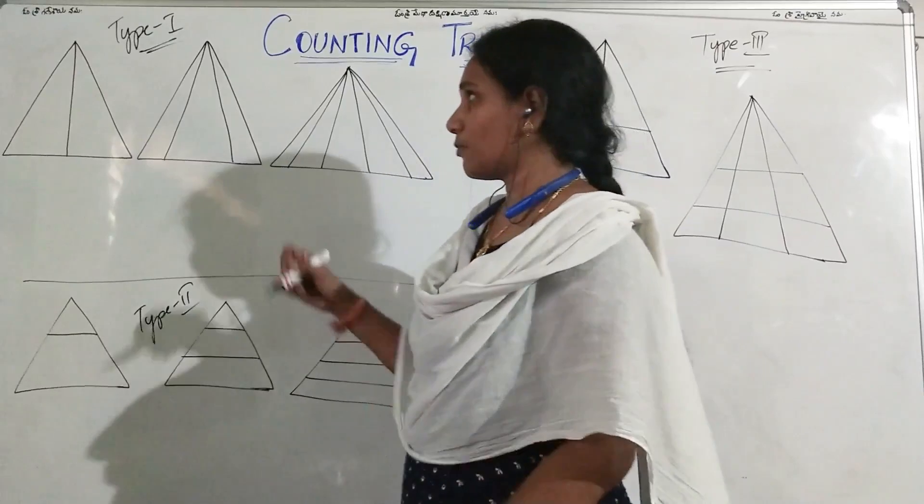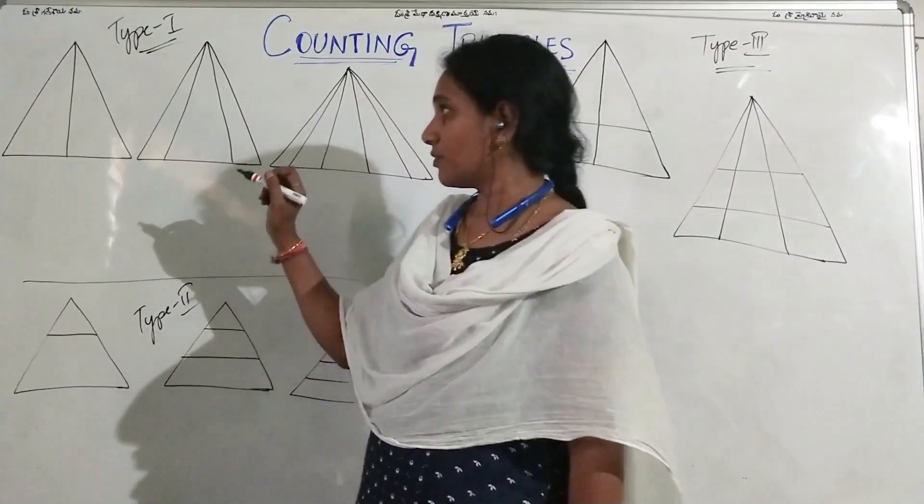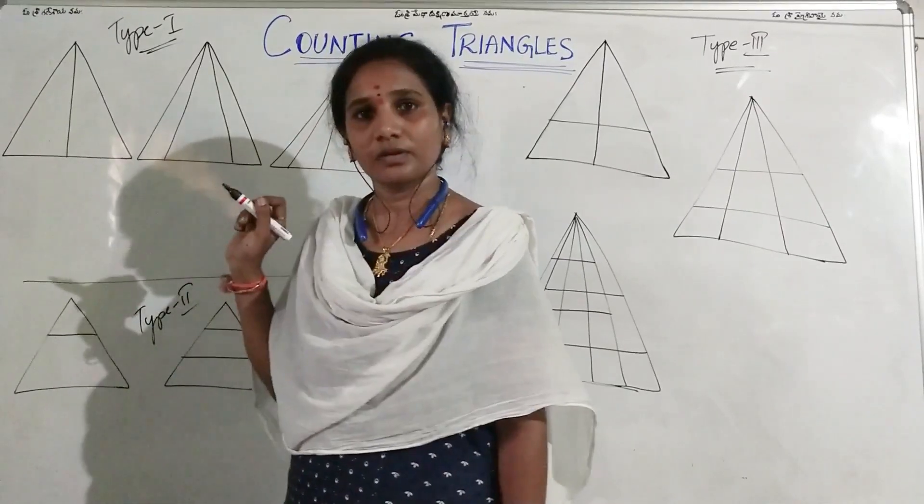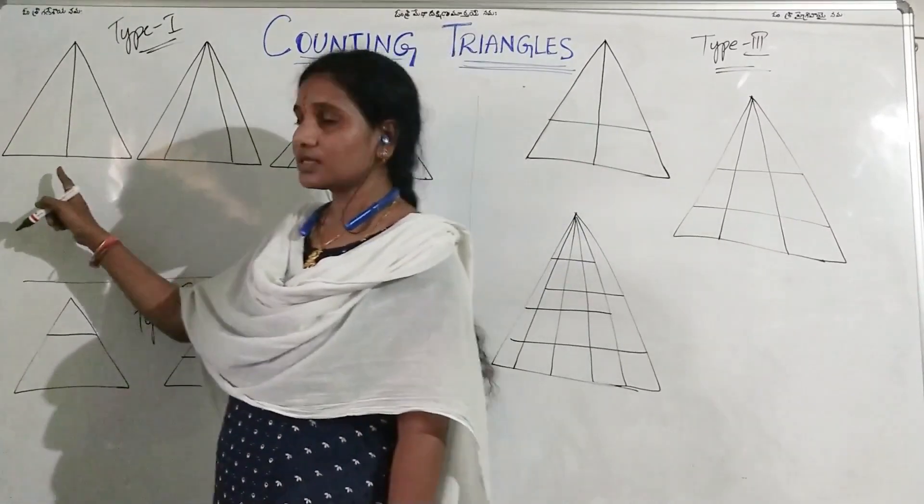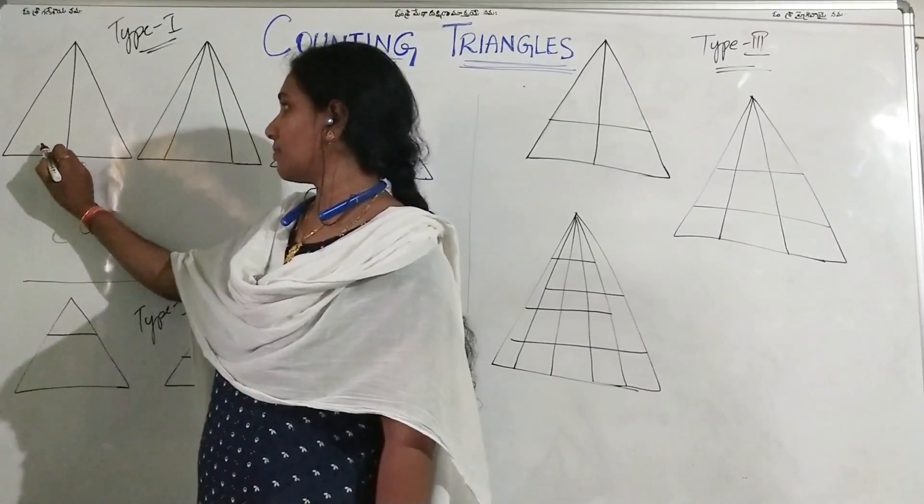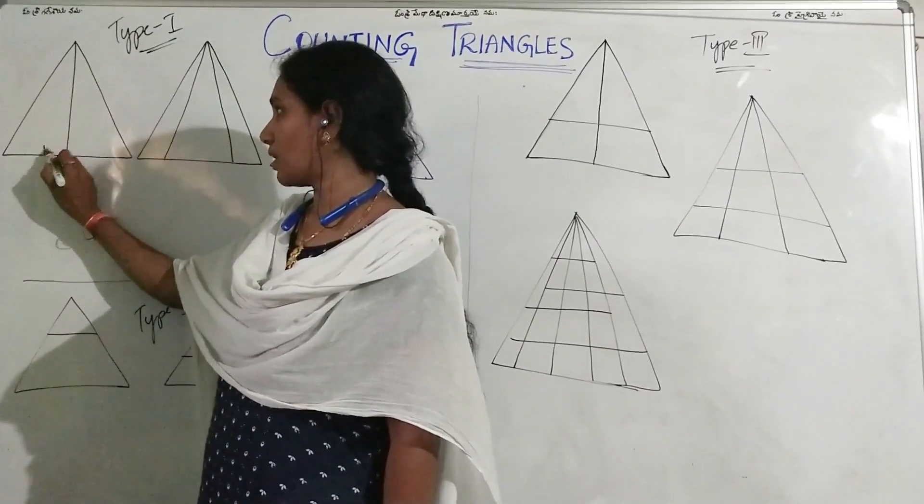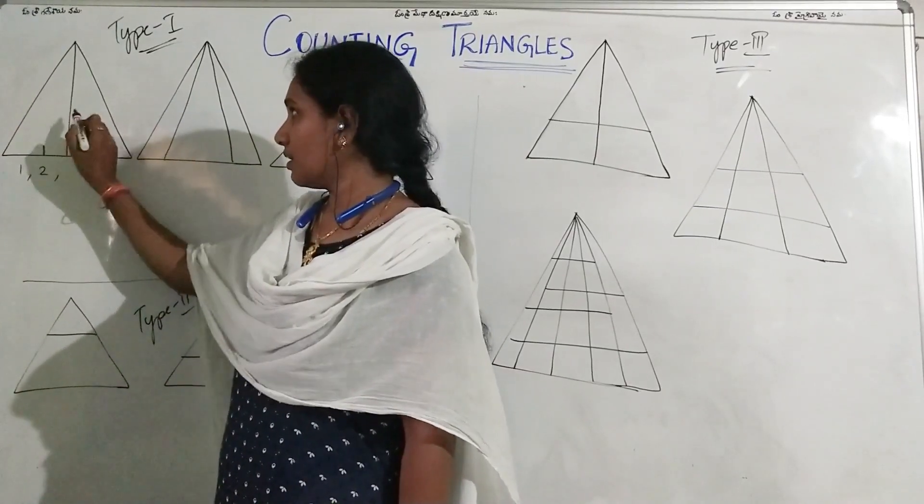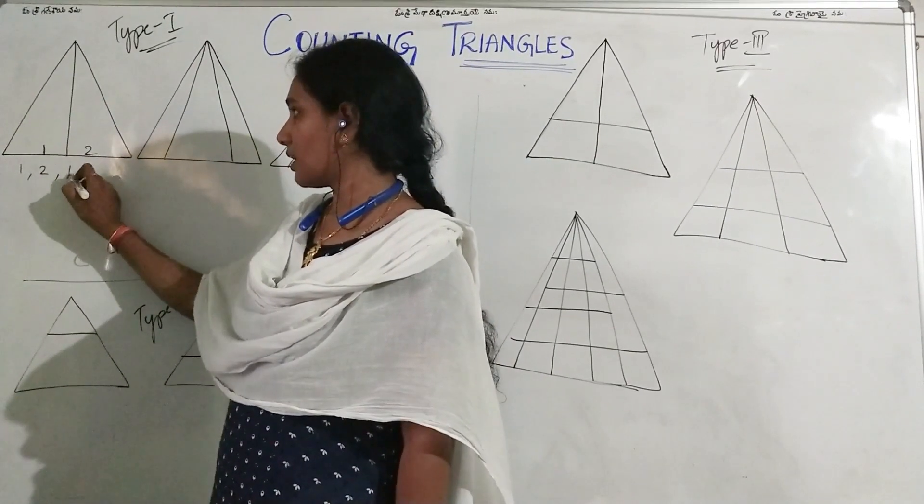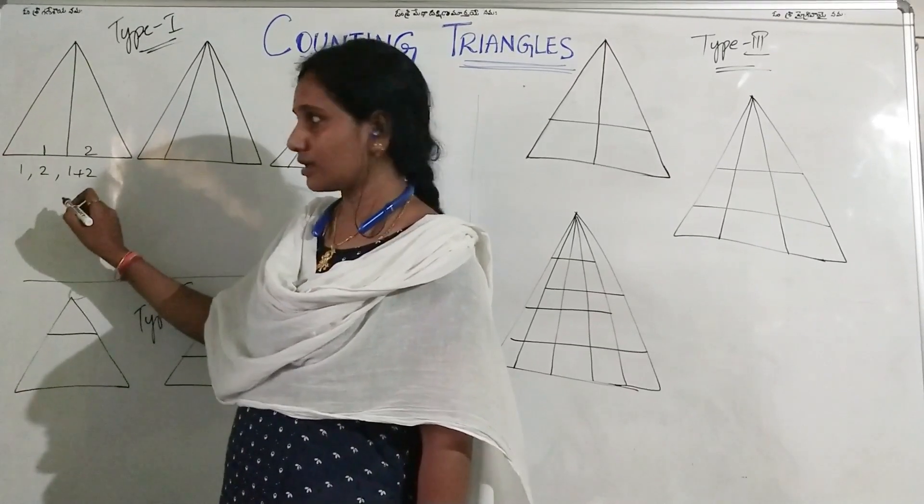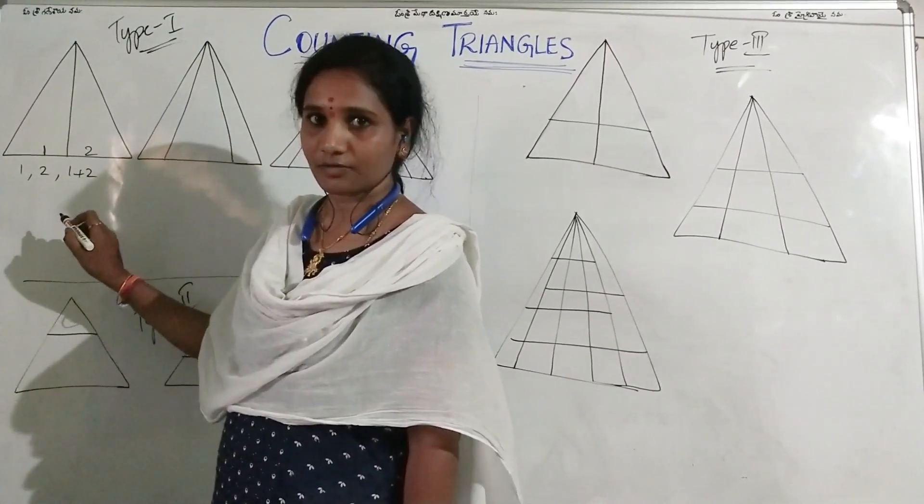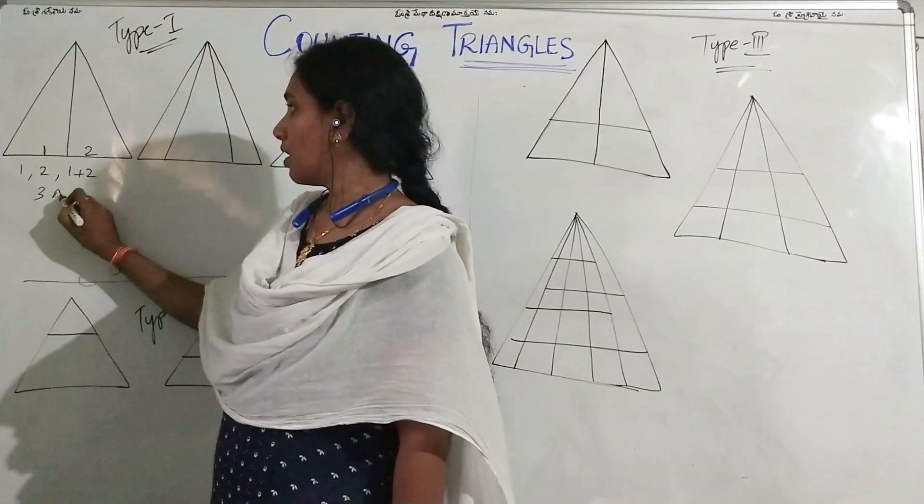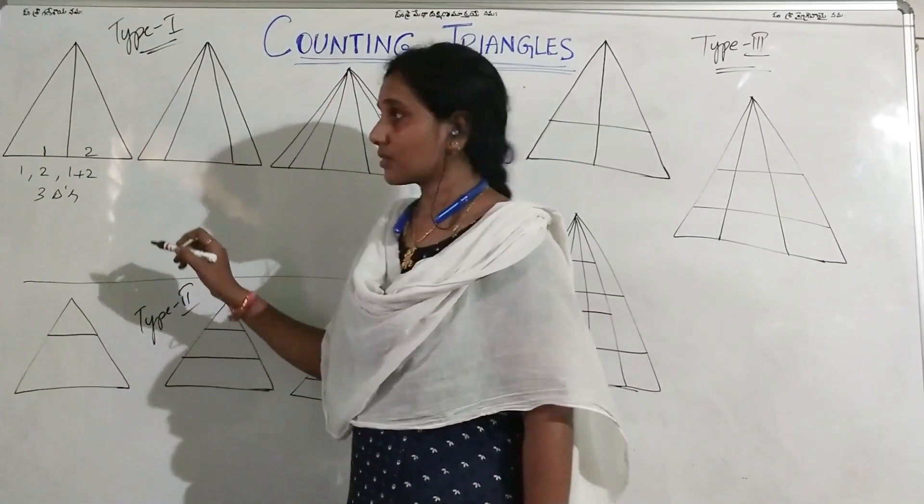Let us see Type 1. In this type, if the figure is given in this way, you have to count the number of triangles in this figure. If I mark it as 1 and 2, now 1 is a triangle, 2 is a triangle, and 1 plus 2 forms a bigger triangle. So totally here 3 triangles are formed.